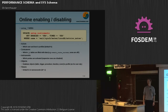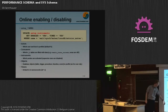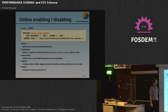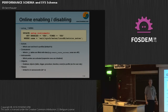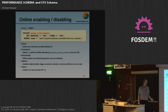A new concept is that you have to enable or disable different features in the performance schema, and these are the setup tables. We have setup_actors, consumers, instruments, objects, and timers. You do this with UPDATE statements. In this case we want to enable the event wait sync mutex InnoDB autoextend — that's an internal mutex which controls the autoextend behavior of InnoDB. We enable it by updating performance_schema.setup_instruments and say yes, it's enabled, and yes we want to know how long it was running — not only how often, but also how long.